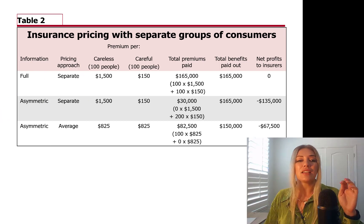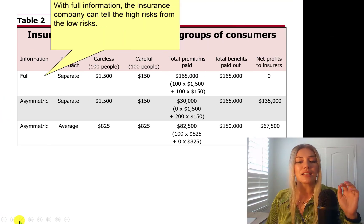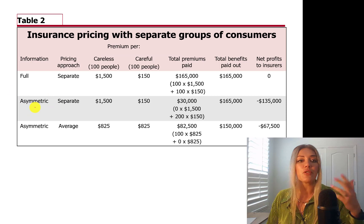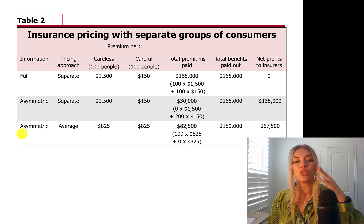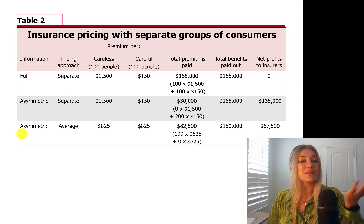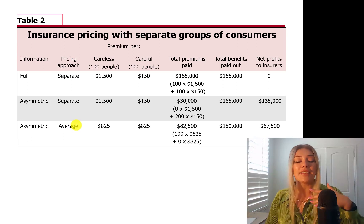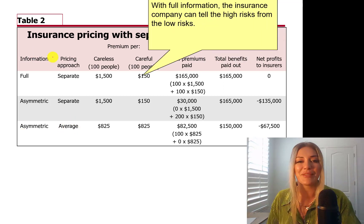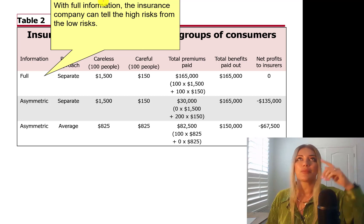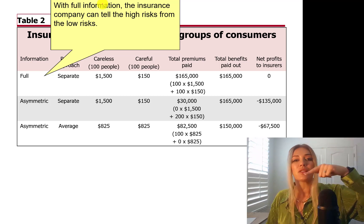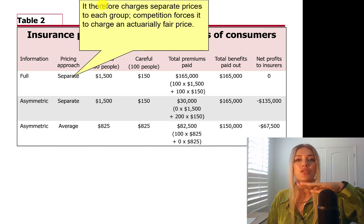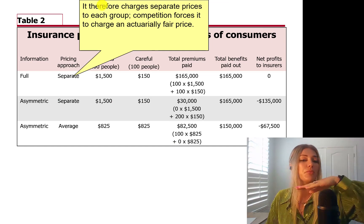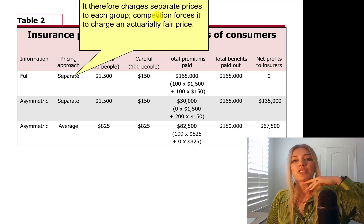In the second case, the insurance company does not know whether you're careful or careless and will try separate pricing. In the last case, with asymmetric information, the company tries average pricing. With full information, the insurance company can tell high-risk people from low-risk people and charges them accordingly. Competition forces it to charge an actuarially fair price.